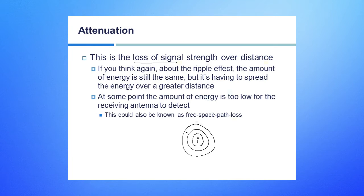And so we would call that the attenuation - it's just spreading the same amount of energy over a greater distance. And at some point that energy would be so low that the receiving antenna wouldn't be able to detect it.